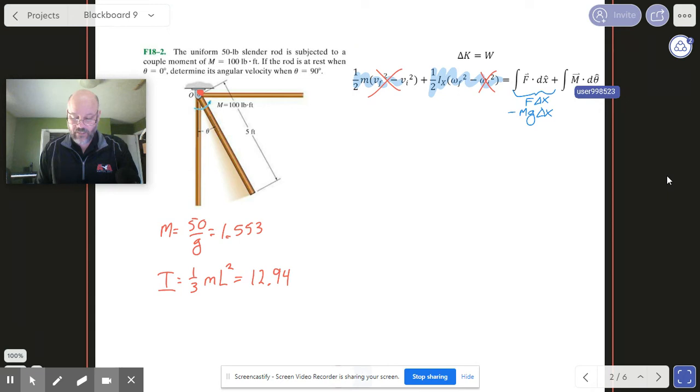Okay, now for the other one, the other term—the mass is constant, so this whole thing just turns into an M delta theta, and our moment this time is given to us. It's that value of 100 right there. And M is—whoo, that's not the right M—M is 100, and our delta theta is pi over 2.